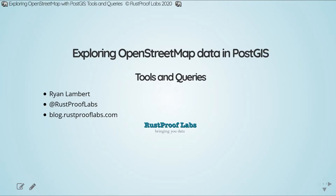I'm here with Ryan Lambert, the owner of RustProof Labs. Ryan's been working with GIS since 2011, and got his start when, on a quest to update a roadmap, he started using PostGIS, Postgres, and OpenStreetMap. He has since been a contributor to the OpenStreetMap project since 2015, and has spoken on PostGIS at both small and large scales. He is currently working on a book on how to use PostGIS and OpenStreetMap together. With that, I'm going to hand it off to Ryan.